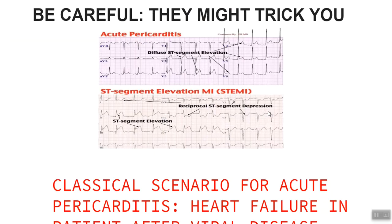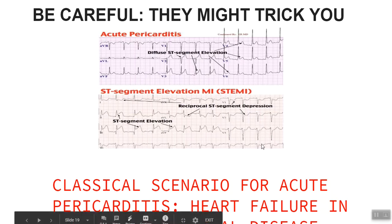It is super high yield to know the difference between myocardial infarction and acute pericarditis. In acute pericarditis, ST elevations are diffuse and widespread, the pain is milder, and there is a history of viral illness. In myocardial infarction, ST segment elevations are limited to only some leads, based on the area affected. The classic scenario for acute pericarditis is a patient with left-sided chest pain after suffering from a viral flu, so keep that in mind.